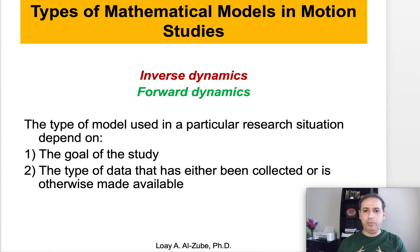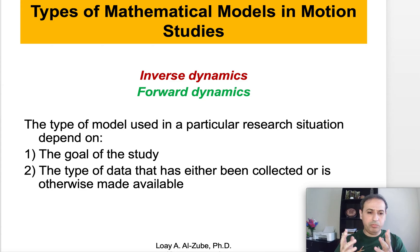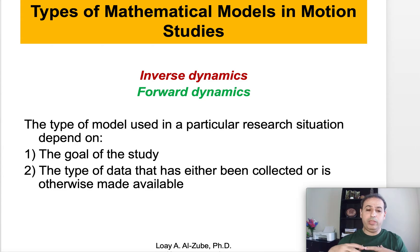The types of mathematical models used in human motion studies and analysis: the first is called inverse dynamics and the other is called forward dynamics. Before we dig into these two different methodologies, we need to make sure that everybody understands that the type of model used, whether inverse or forward, in a research situation depends on two things: first, what is the goal of the study, and second, what is the type of data that has either been collected or is otherwise made available to us. These two points decide which one we're going to be using.